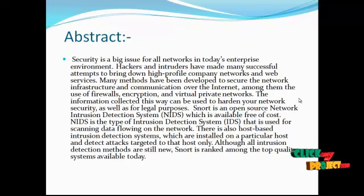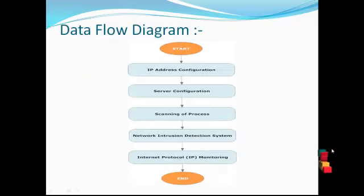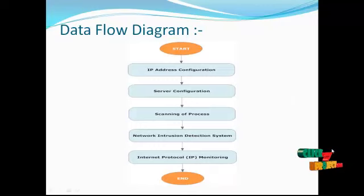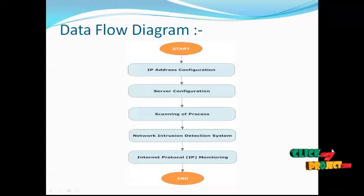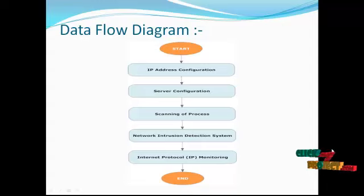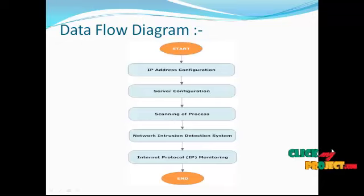Now let's see the data flow diagram of our project. Here the user needs to configure the IP address. After IP configuration, the configuration will be carried out on both sides. Only the permitted IP and permitted port number can access the server. Those without privileges to access the server will not be allowed to make use of the server information, so the server can block the IP. After configuring the IP address, it will proceed to server configuration.